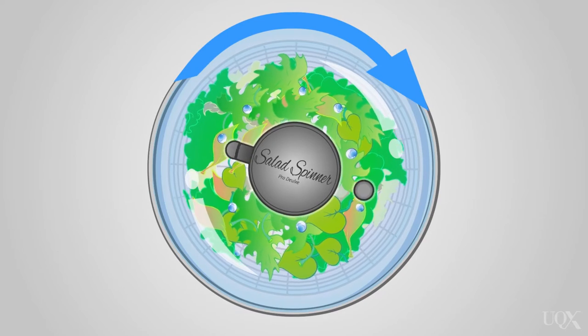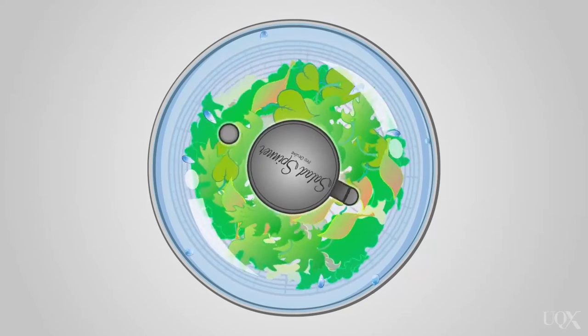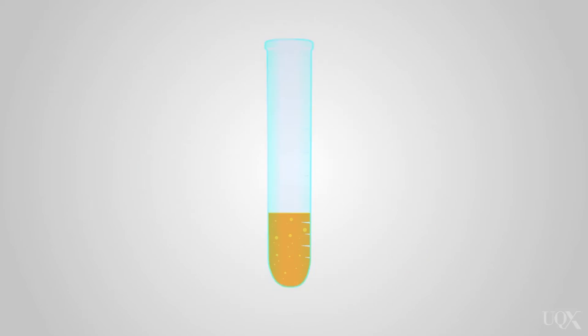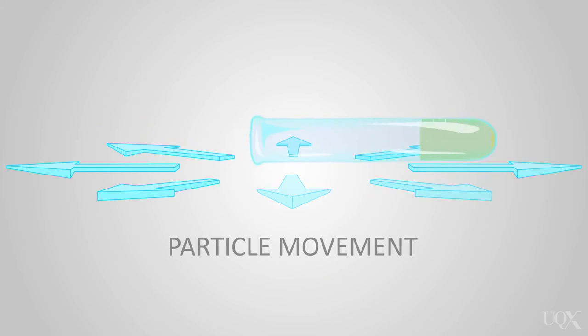From our previous observations of circular motion, we observed the following. The droplets from the salad spinner moved out tangentially. The solids in the centrifuge moved in a circular path. From these experiments, we still do not have a clear idea of the direction of the forces involved.